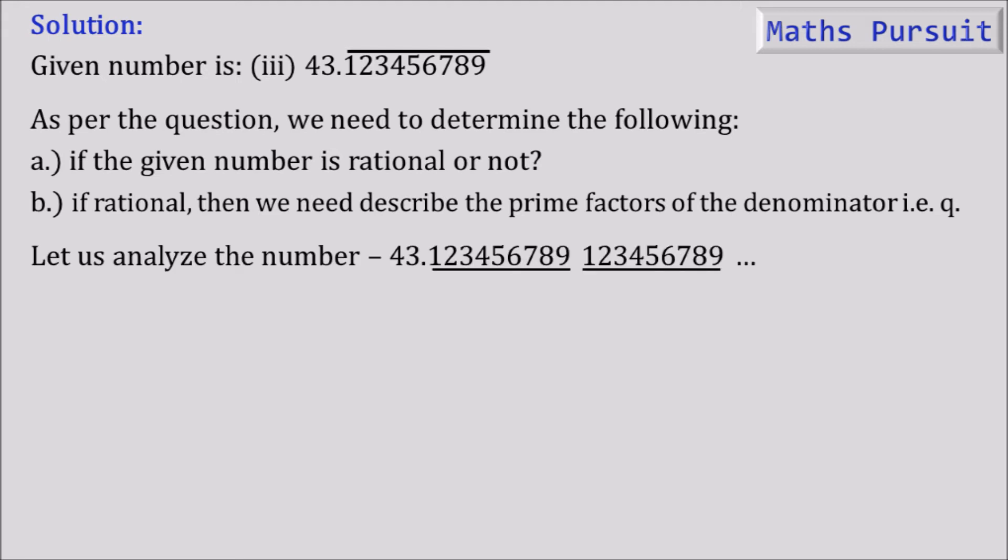So let us analyze the number. The number is 43.123456789 bar. So we can write that as 43.123456789 and then again 123456789, and it will keep on repeating because the bar symbol is given above 123456789.